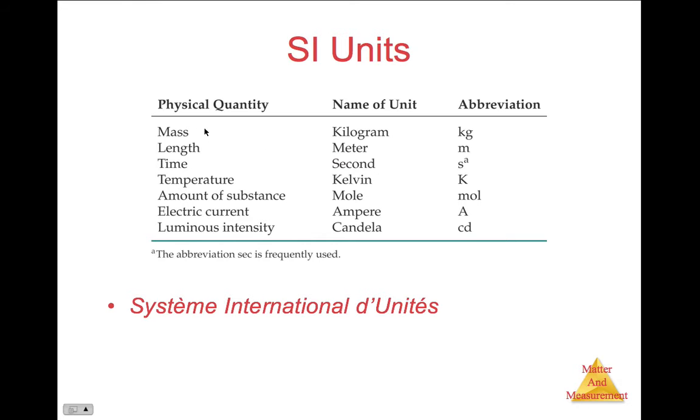The basic quantities of mass, length, time, temperature, amount of substance, electric current, and luminous intensity are listed over here. And their abbreviation is given next to it.